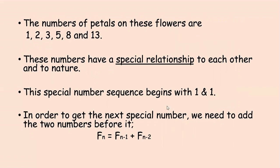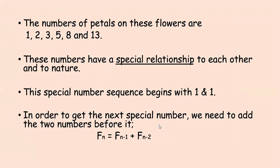This special number sequence begins with 1 and 1. In order to get the next special number, we need to add the two numbers before it. The formula for this is Fn = Fn-1 + Fn-2. Let's make the sequence: 1 plus 1 is 2; 1 plus 2 is 3; 2 plus 3 is 5; 3 plus 5 is 8; 5 plus 8 is 13; and 8 plus 13 is 21 — and so on. These special numbers are popularly known as the Fibonacci numbers.